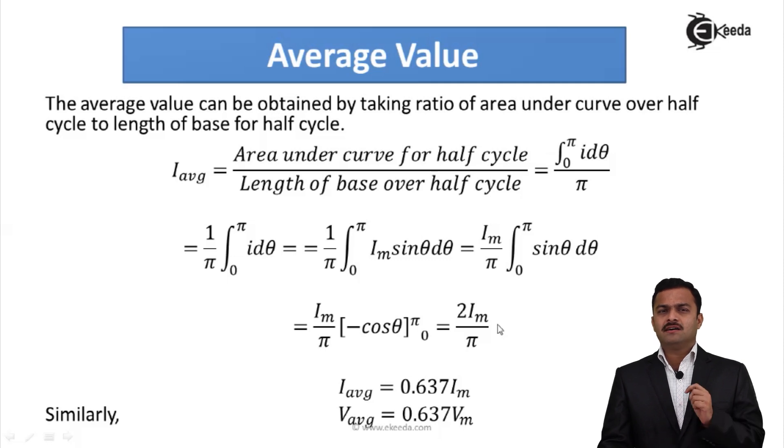So I can say I_average is nothing but 0.637 Im. Similarly, V_average I can say 0.637 Vm. So average value is nothing but 63.7% of the maximum value for AC quantity.